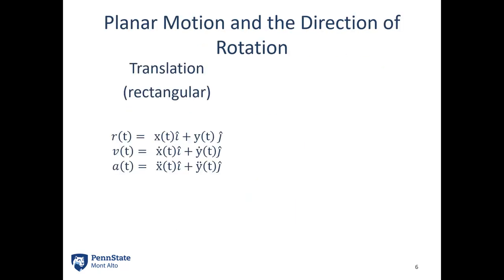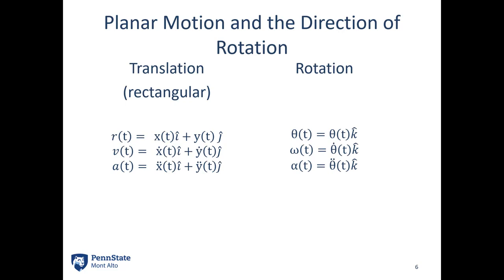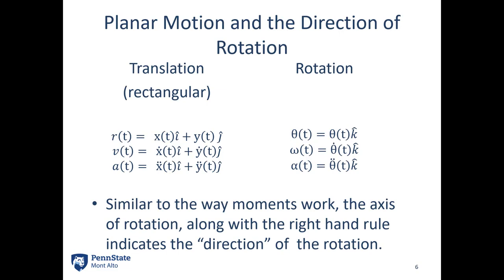When we talk about direction: with translation we had x and y in 2D, and i and j are the unit vectors in those directions. In rotation for 2D, we talk about the rotation about the axis we're looking at. In 2D, that rotation is always going to be about the z-axis, which we use k — the k unit vector — to indicate the z direction. This is very similar to the way moments work. The axis of rotation, along with the right-hand rule, indicates the direction of that rotation vector.